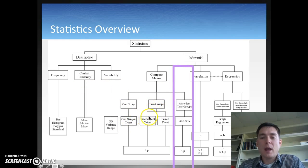If we have two groups and they're not related, they're different people in each group, we use an independent t-test. When we have two groups that are the same people, we use a paired samples t-test.